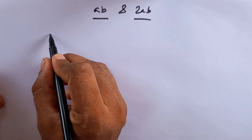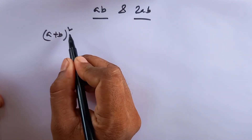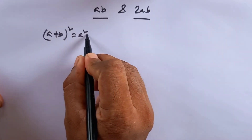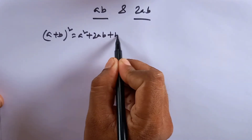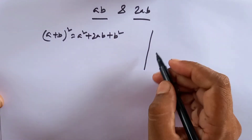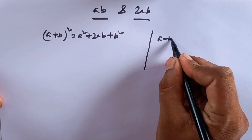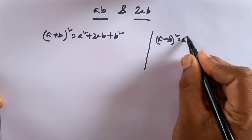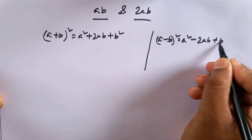First, you know A plus B whole square means A squared plus 2AB plus B squared. And second, you know A minus B whole square means A squared minus 2AB plus B squared.